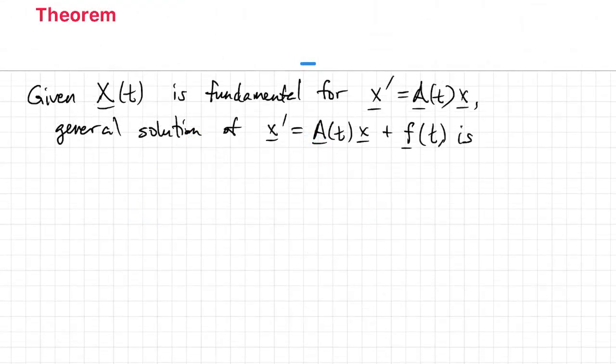That leads to the following theorem. The general solution of the forced problem has the homogeneous part plus X of T times the integral of what we just found.